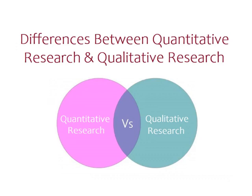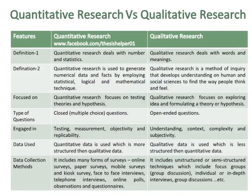Differences between Quantitative Research and Qualitative Research. Definition 1: Quantitative research deals with numbers and statistics while qualitative research deals with words and meanings. Definition 2: Quantitative research is used to generate numerical data and facts by employing statistical, logical and mathematical techniques, while qualitative research is a method of inquiry that develops understanding on human and social sciences to find the way people think and feel.